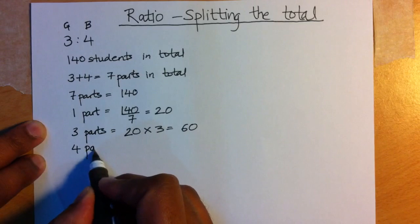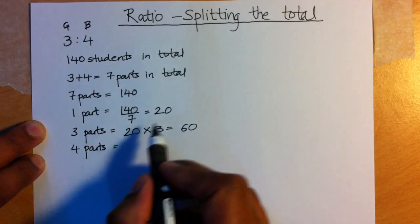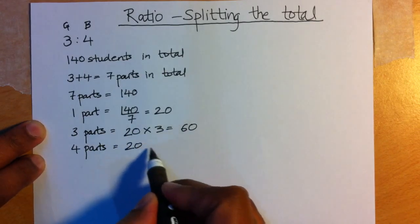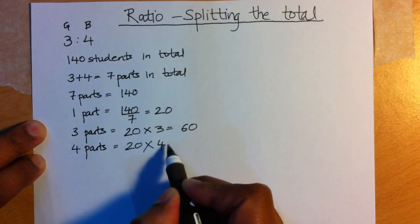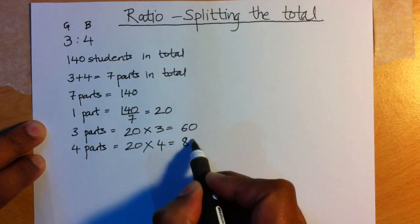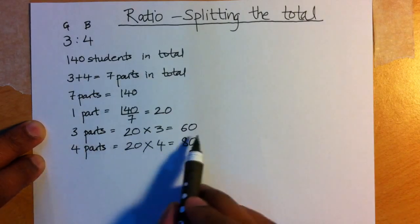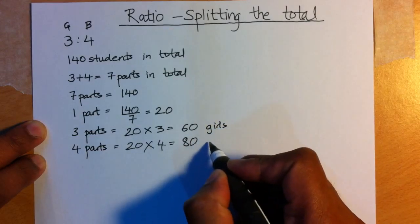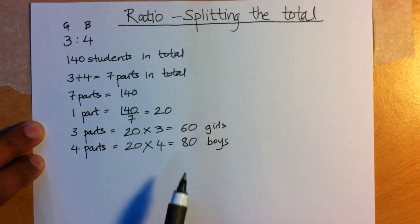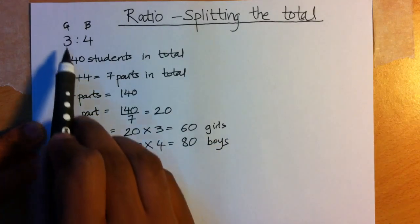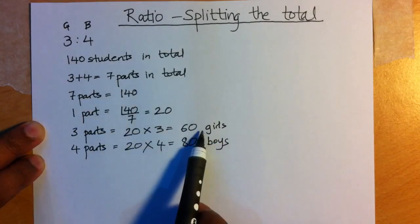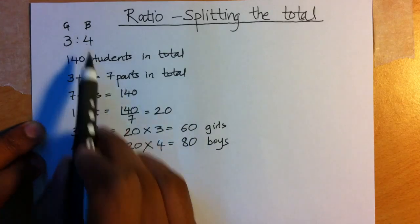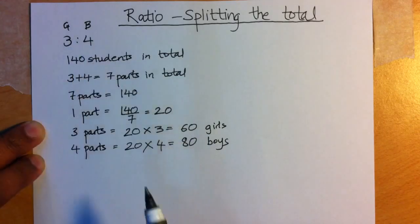And 4 parts will be 1 part, 20, times 4 of them. 20 times 4 is 80. So really we have 60 girls and 80 boys. So 3 parts relates to the girls, which is 60 in total. 4 parts relates to the boys, which is 80.